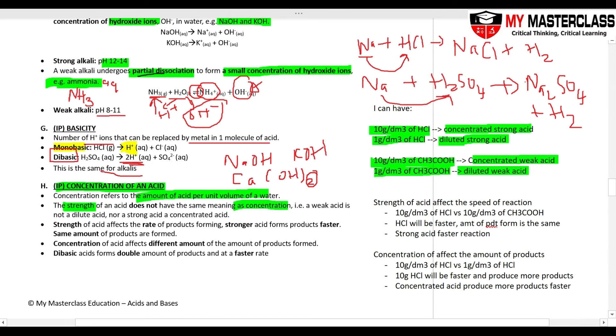So what does this mean in terms of reactions? Strength of acid affects the speed of reaction. So if I have an example of 10 grams HCl versus 10 grams CH3COOH. So both are concentrated, but the difference is my HCl is a strong acid, this is strong. CH3COOH, this is weak. So when reactions start, HCl reaction will be faster. But the amount of product formed is the same. So this one will give me, say for example, 10 cm³ of hydrogen gas. This will also give me 10 cm³, but slower. At the end of it, stronger acid means faster reaction.